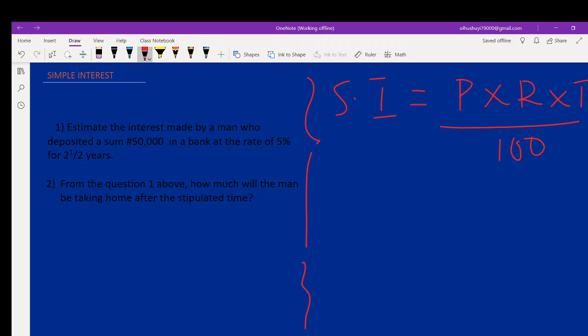With knowledge of change of subject of formula, you can say your principal will be equal to simple interest times hundred divided by rate times time. The same thing goes for your time: the time will be simple interest times hundred upon the principal times rate.